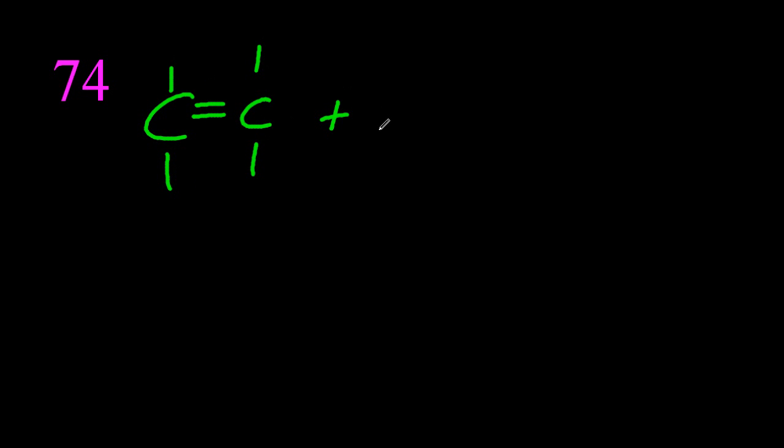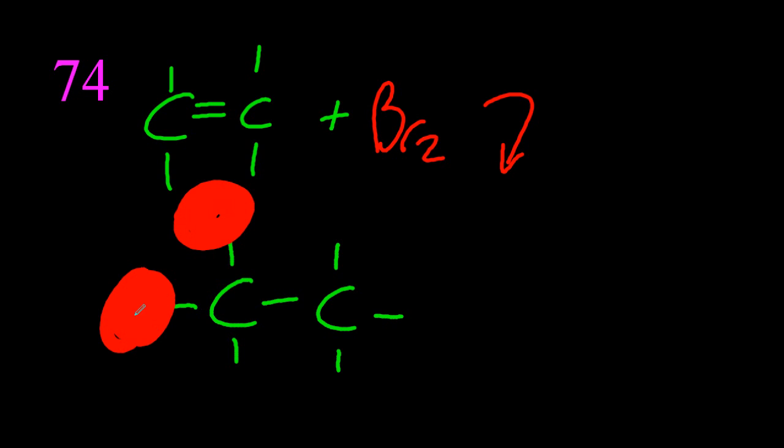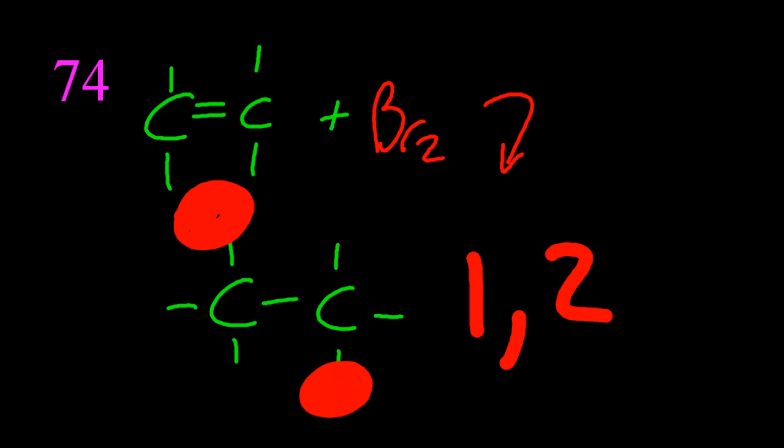74. If I brominate ethene, am I going to get 1,1-dibromo ethane? No I'm not. Bromine is really big. It won't fit. Two of them won't fit comfortably on the first carbon. So it's 1,2-dibromo ethane is produced. And 75.